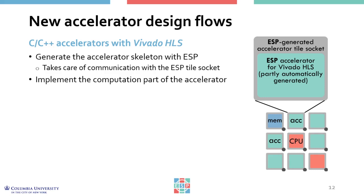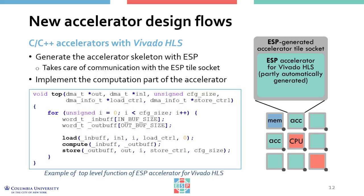To design an ESP accelerator with Vivado HLS, the designer can first generate the accelerator skeleton with the interactive script, and then fill in the computation part. The code snippet shows the top-level function of an ESP accelerator for Vivado HLS, where load, compute, and store work in a pipeline. The load function reads data from memory, the compute function calls the computational kernel — which is the only part the designer should implement manually — and the store function writes the results back to memory. It's also pretty seamless to integrate existing Vivado HLS accelerators into ESP.